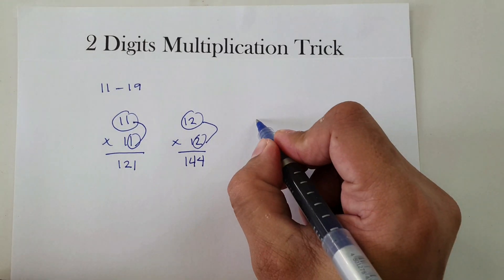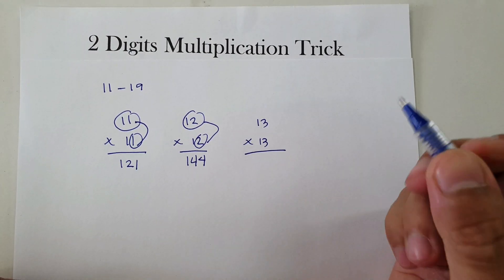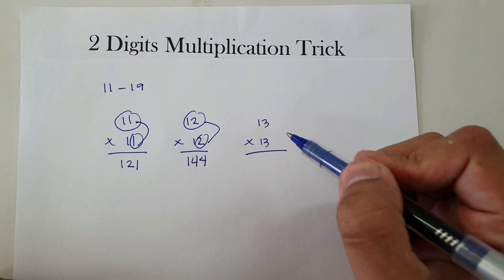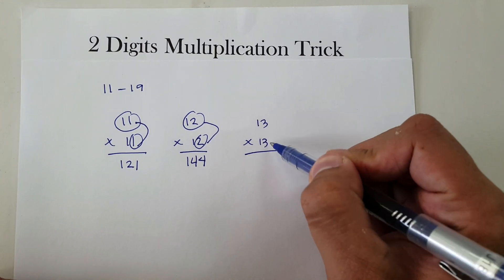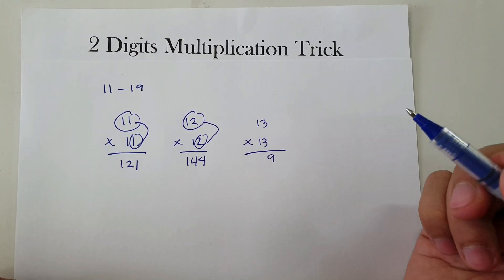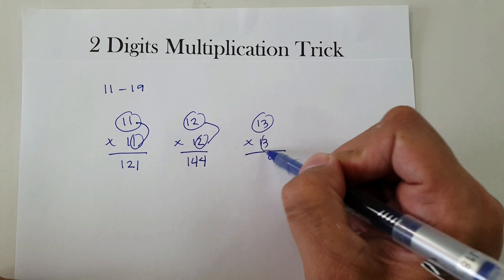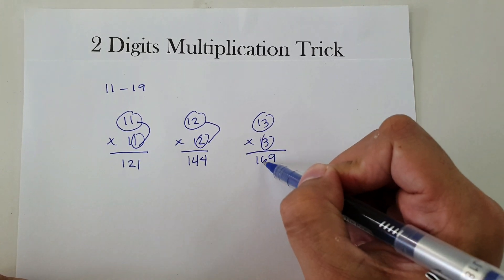Next, let's have 13 times 13. So 3 times 3 is 9. Then 13 plus 3 is 16. So 13 times 13 is 169.